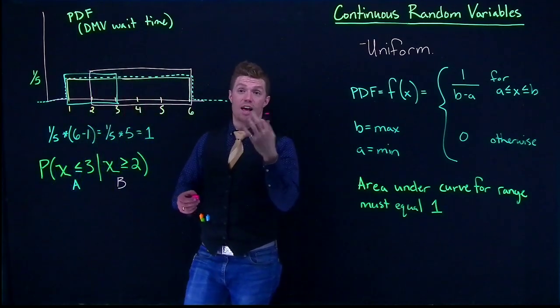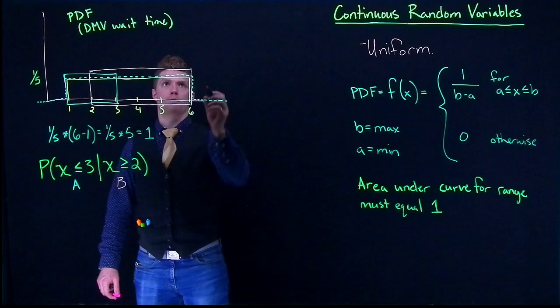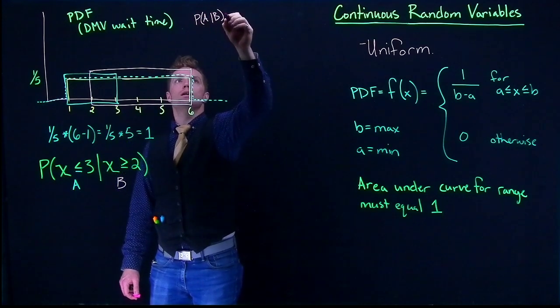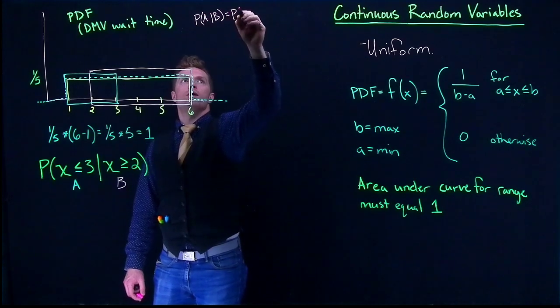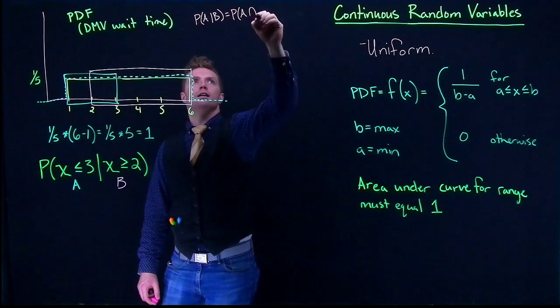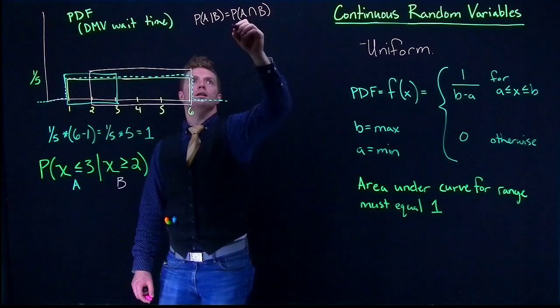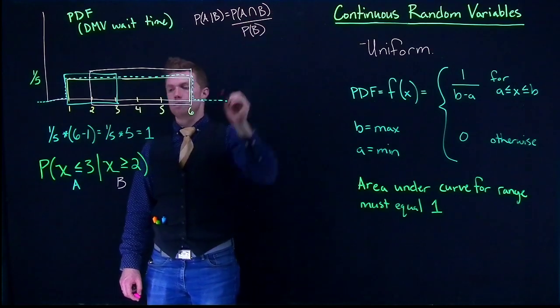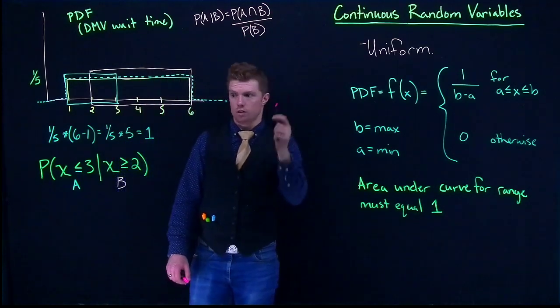And we're interested in that range. Remember back to our conditional probabilities. Probability of A given B is equal to the probability of A intersect B divided by the probability of B. We can do this.